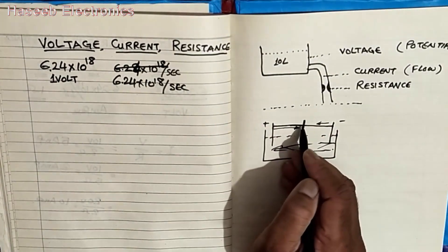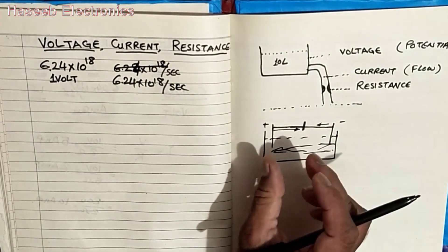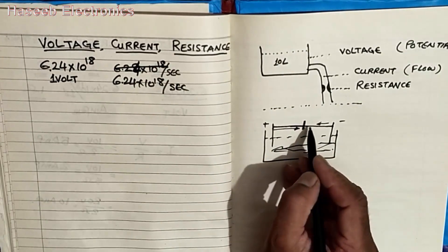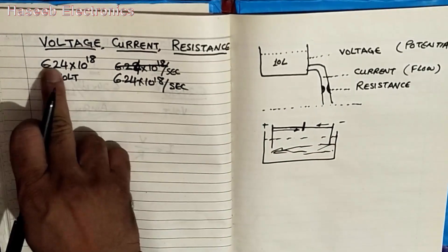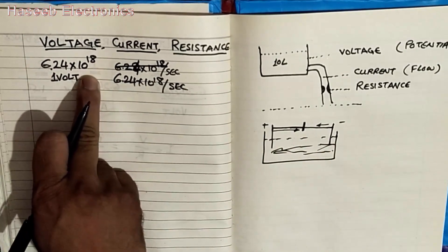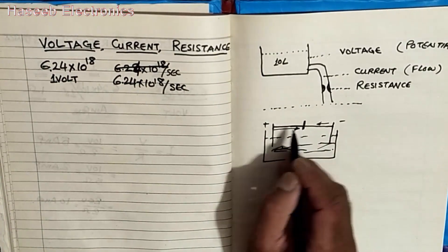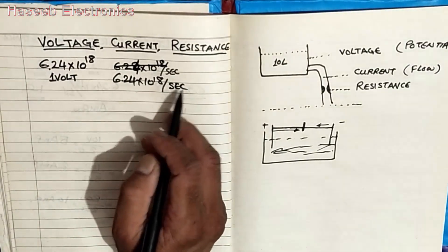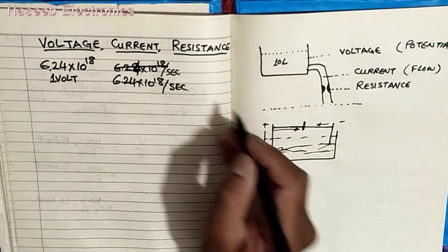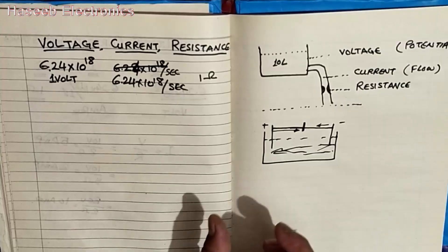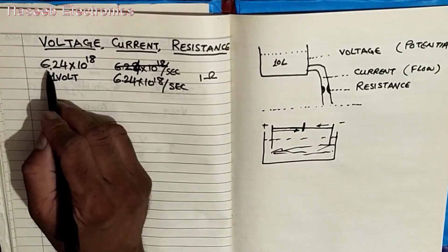How many electrons are moving from a cross-section per unit time — that is 1 second — is called current. If we apply 1 volt, that is 6.24 × 10^18 electrons of potential difference, and the conductor allows movement of 6.24 × 10^18 electrons per second, that means it has 1 ohm resistance. It is very easy to understand.